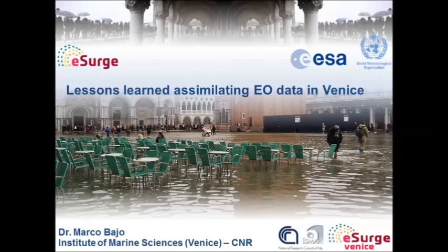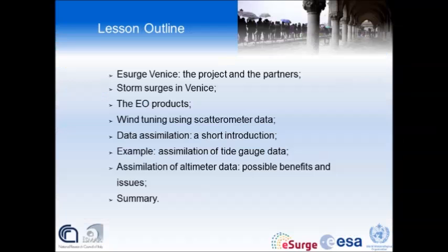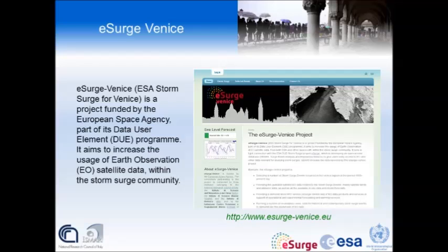I will make a short introduction on data assimilation that you have already seen, and then I will speak about a simulation of altimeter data that is still a work in progress for us. This is the web page of the project named Serge Venice, which is funded by ESA and NASA. On the web page you can find the sea level forecast for Venice, updated, along with some data regarding storm surge events of recent years.